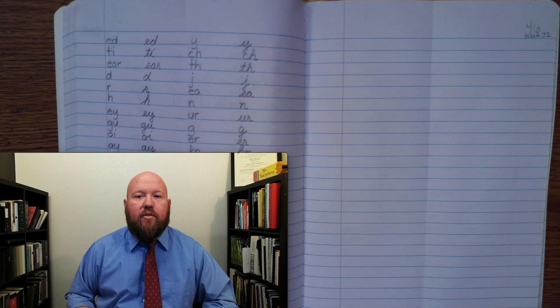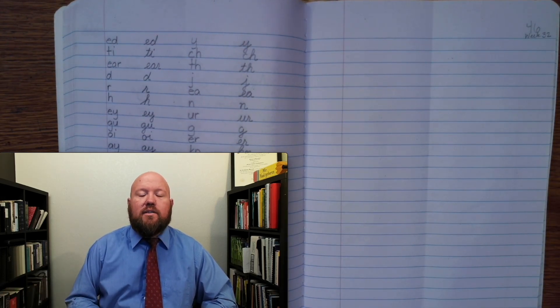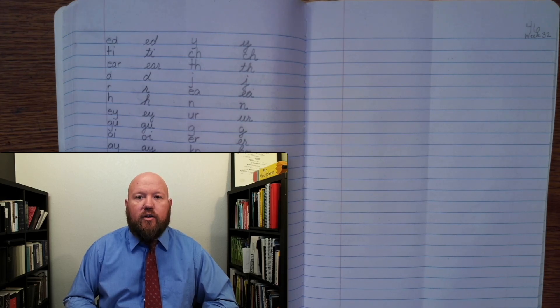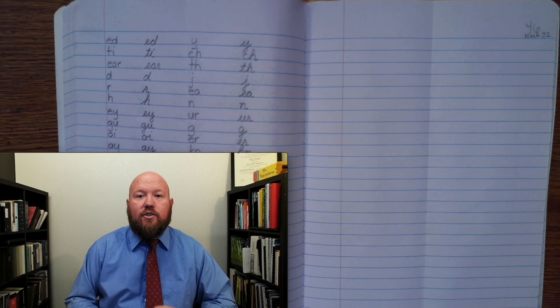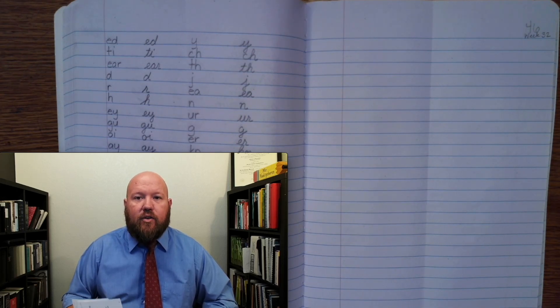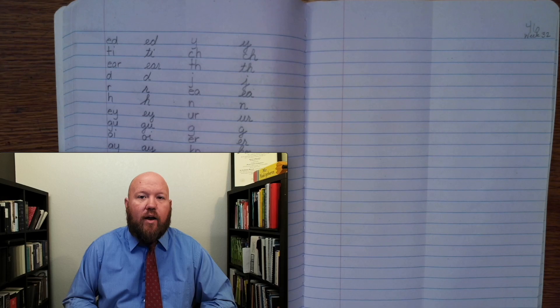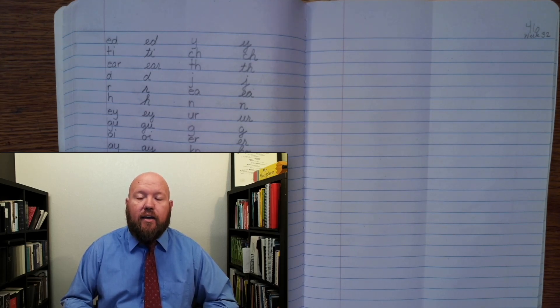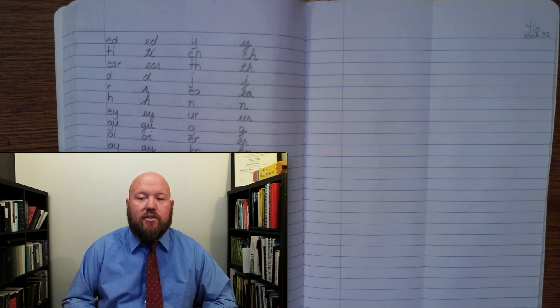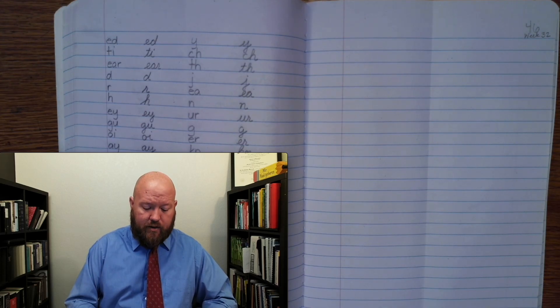Now we'll do the written phonogram review. And for the written phonogram review, I will say the sound followed by the Q if there is one. You should say the sound and the Q if there is one as you write it. Now, as you write it, don't look at mine to see what it is. Just write it as best you can for memory. Then look. If you get it right, that's great. If you don't, that's okay. Just put a line through it and write the correct answer next to it. That way you can know which ones you need to spend extra time practicing. All right, here we go.